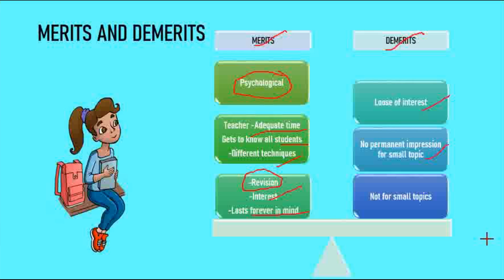It does not work well for small topics. If the topic is small, dividing it into subunits becomes difficult. It is a very bulky task as the subject matter must be divided into subunits, which creates a lot of work. These are the merits and demerits of this concentric approach.